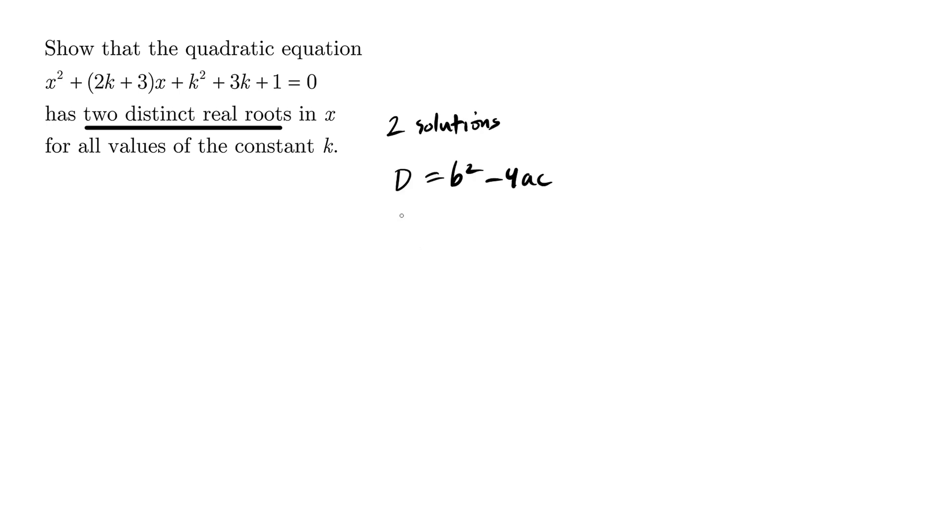Recall the discriminant formula b squared minus 4ac, and we know that the discriminant b squared minus 4ac is greater than zero when there are two solutions.